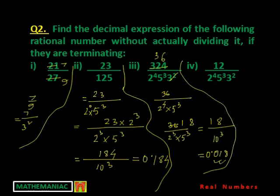Now look at the next problem — it is already in the factored form, so your task is less. You can see this number is divisible by 9 (3 squared = 9), so first remove the 9. Dividing gives 36 divided by 2 to the power 4 and 5. Now to get the decimal expression, complete the pair: multiply by 5 to the power 4 accordingly. After simplification you arrive at 18 divided by 10 cubed, giving 0.018. For the last case, the denominator still has a factor of 3 after reduction, so it is not of the form 2^m × 5^n and will not have a terminating decimal.